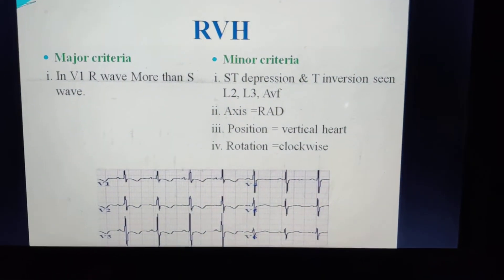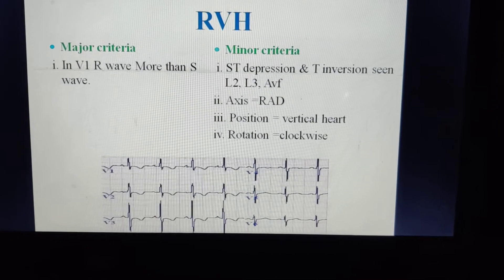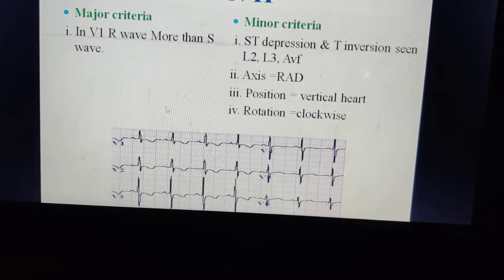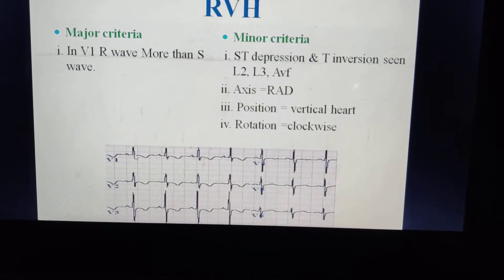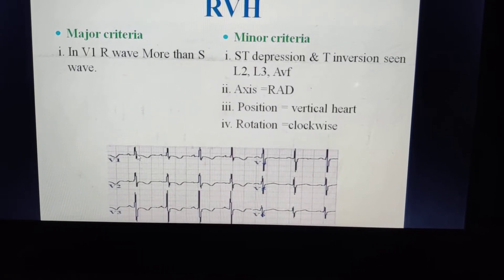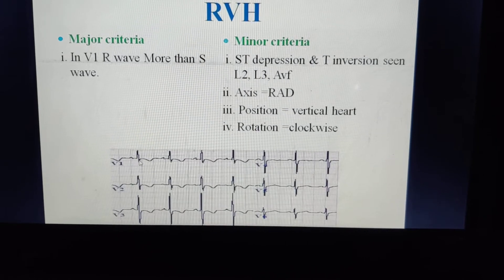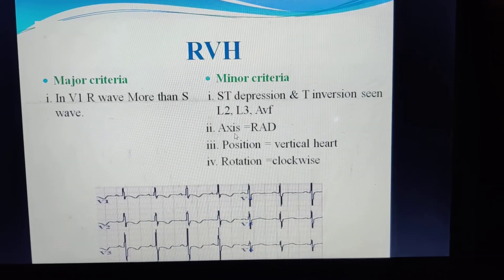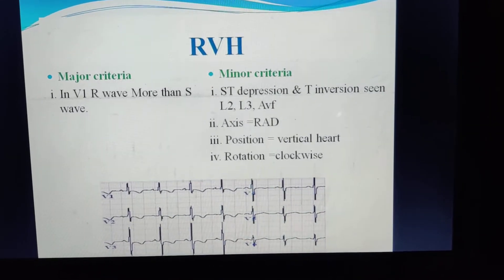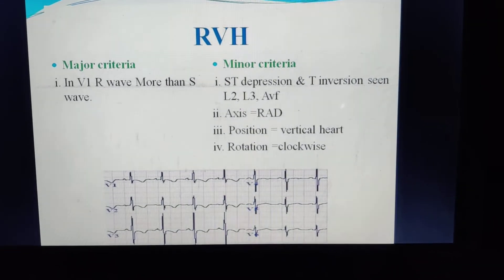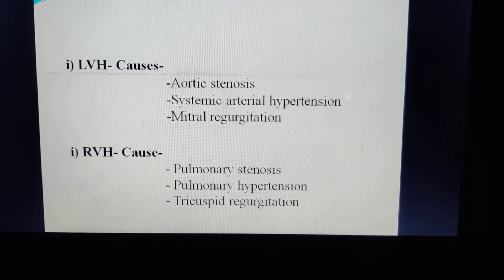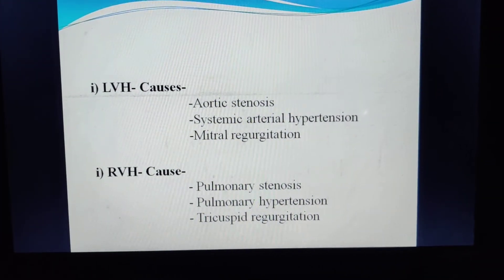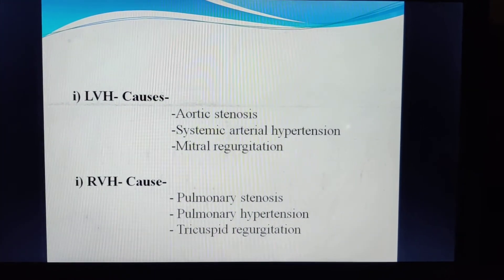In right ventricle hypertrophy, major criteria: in lead V1, the R wave is greater than the S wave. Minor criteria include right axis deviation, vertical position, clockwise rotation, ST depression and T wave inversion in leads L2, L3, and AVF. Causes of right ventricle hypertrophy: pulmonary stenosis, pulmonary hypertension, and tricuspid regurgitation. Causes of left ventricle hypertrophy: aortic stenosis and systemic arterial hypertension.